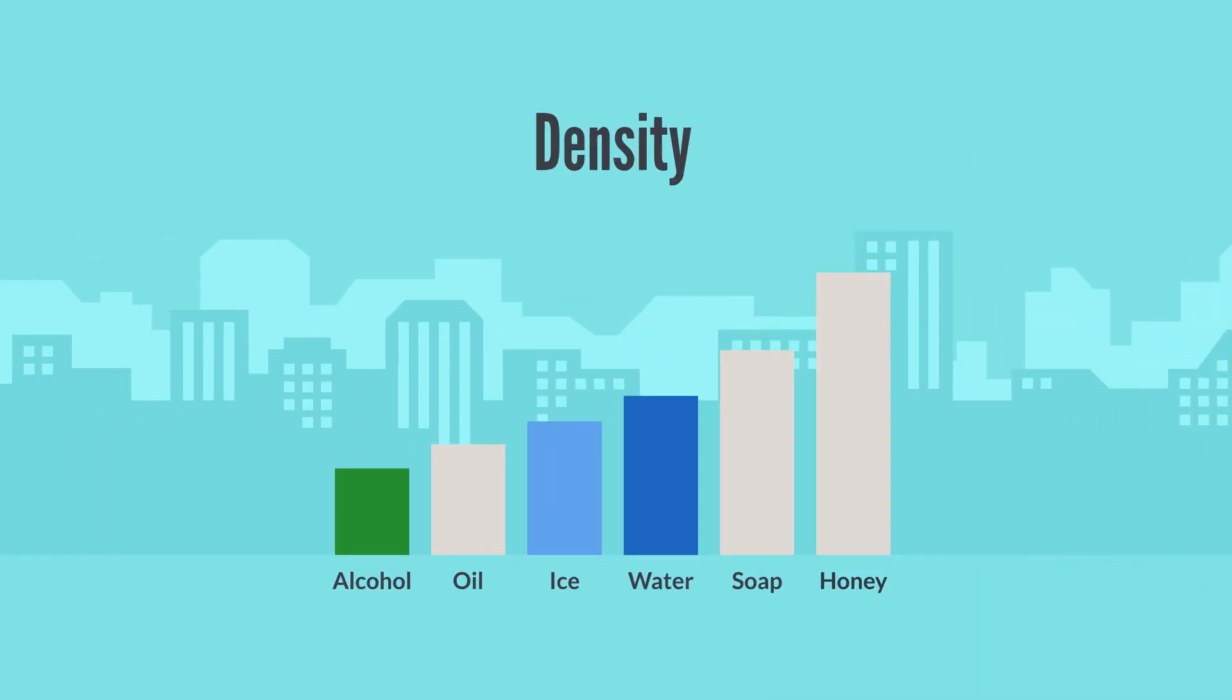Here's a chart which shows the density of some common liquids. Notice alcohol way on the bottom. So the less dense it is the more likely it will flow and the more dense it is the more likely it is to sink. Wow that honey sure is dense.